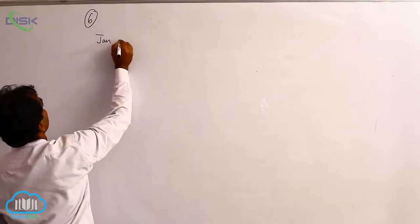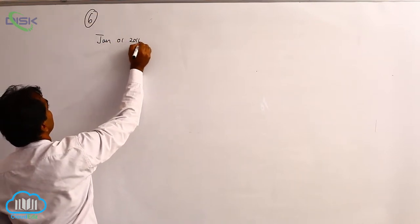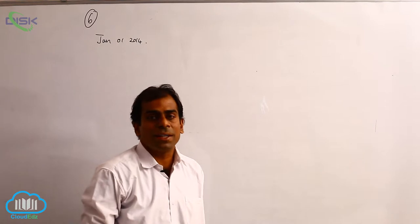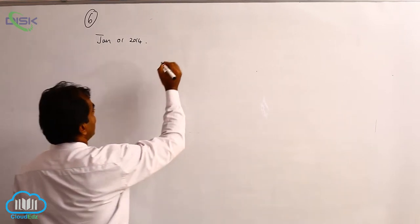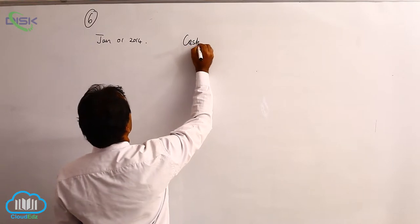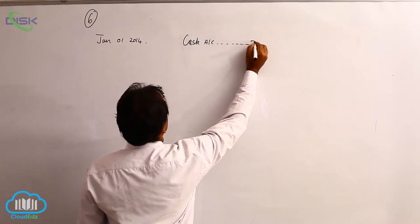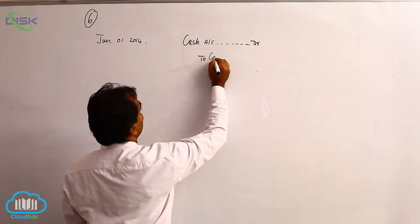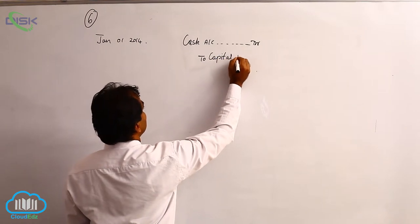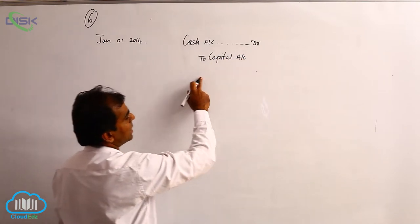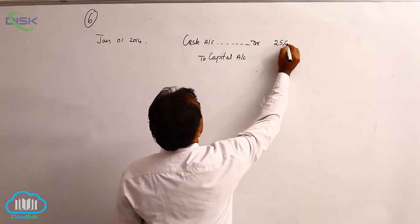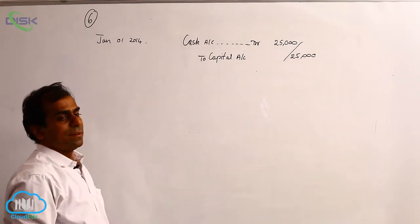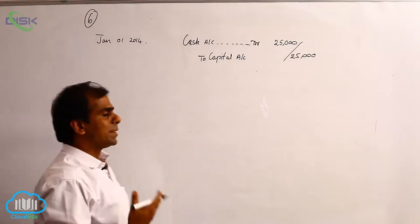The first transaction is on Jan 1st, 2014. The business has started with ₹25,000, so the business is getting cash. Real account is coming in, so we debit what comes in — Cash Account is debited. The businessman is the giver, and he is always referred to as Capital. Being a personal account, we credit the giver — so we credit Capital Account for ₹25,000. Narration: being business started with cash.